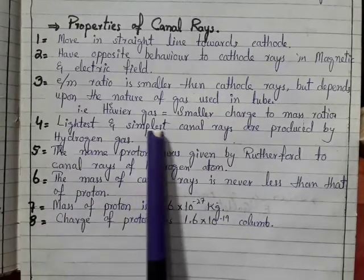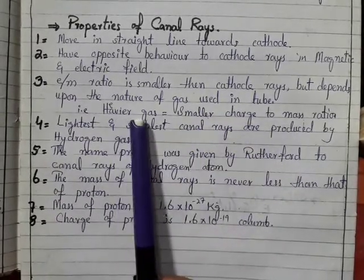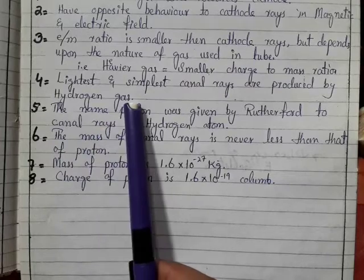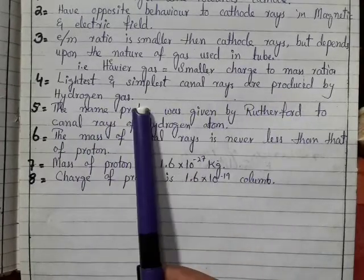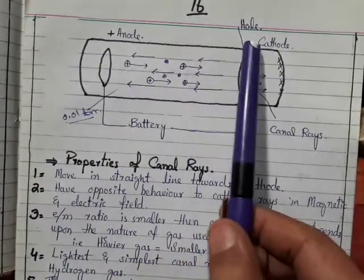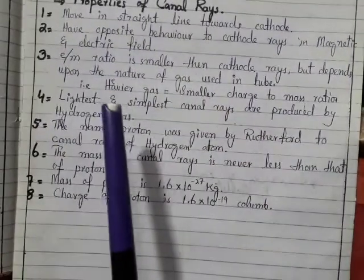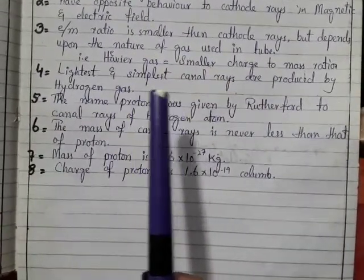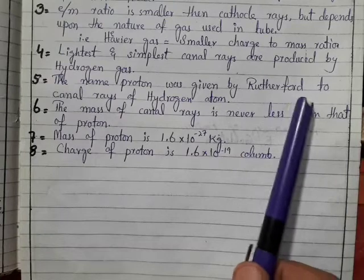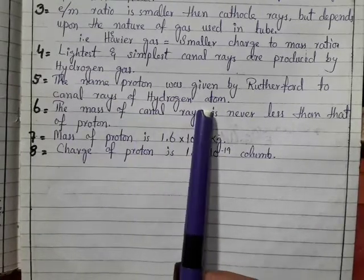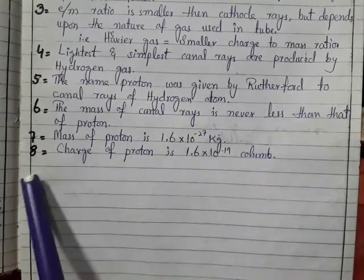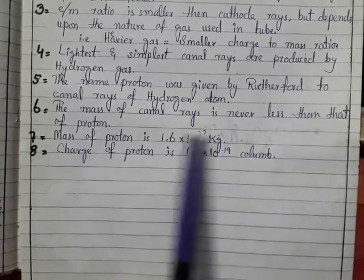For example, heavier the gas, smaller charge to mass ratio. Lighter the gas, larger charge to mass ratio. Point number four: lightest and simplest canal rays were produced by hydrogen atom. The name proton was then suggested or given by Rutherford to the canal rays of the hydrogen atom.